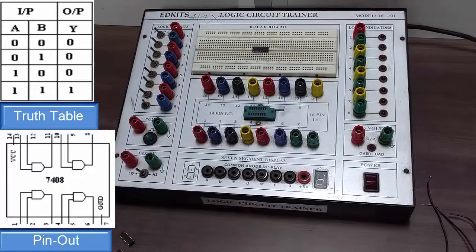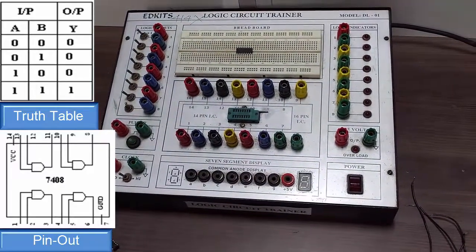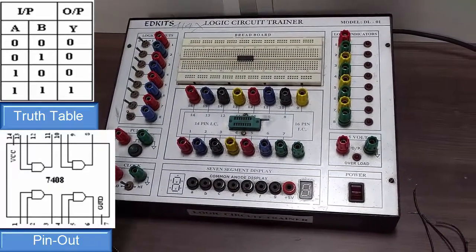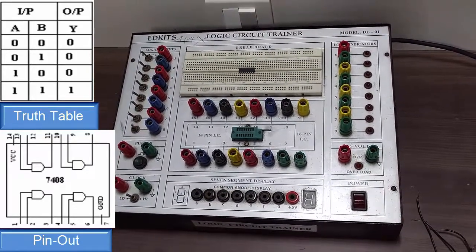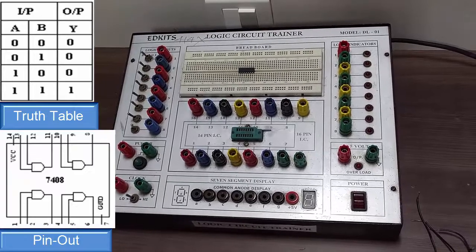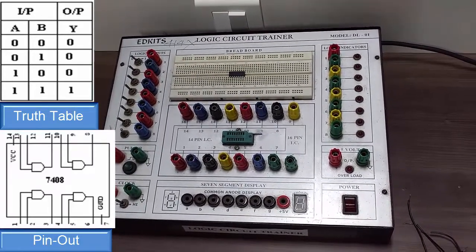We are going to verify the truth table for the AND gate which is shown on the video. As we know, for zero zero we get output zero. Only for both the inputs one, output is one. For rest all the inputs, output is zero for AND gate.